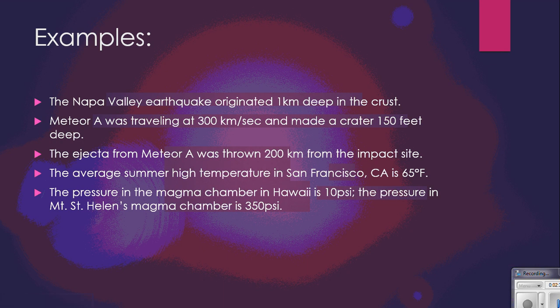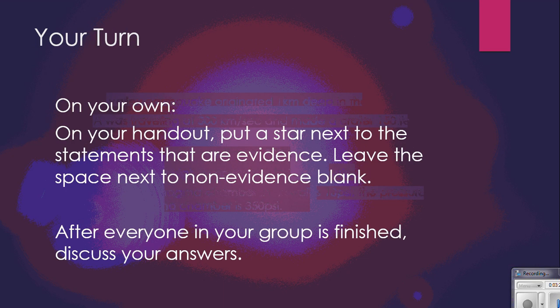Here are some examples of good evidence: the Napa Valley earthquake originated one kilometer deep in the crust. Meteor A was traveling at 300 kilometers per second and made a crater 150 feet deep. The ejecta from Meteor A was thrown 200 kilometers from the impact site. The average summer high temperature in San Francisco is 65 degrees Fahrenheit. The pressure in the magma chamber in Hawaii is 10 PSI, and in Mount St. Helens it's 350 pounds per square inch.